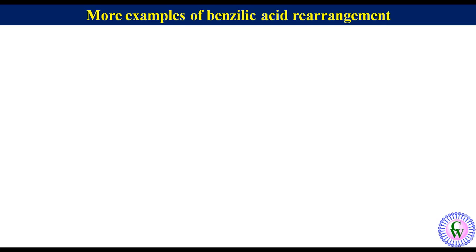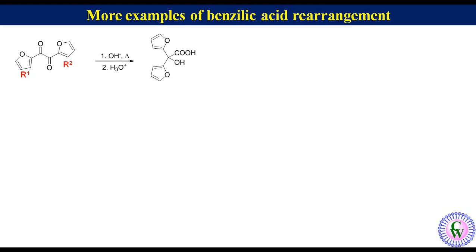Let's have a few more examples of benzylic acid rearrangement. First, 1,2-difuranyl ethane-1,2-dione. In this example, R1 and R2 are furanyl groups. So after benzylic acid rearrangement, it will give a product with a carbon attached to two furanyl groups, a hydroxyl group, and a carboxylic group.